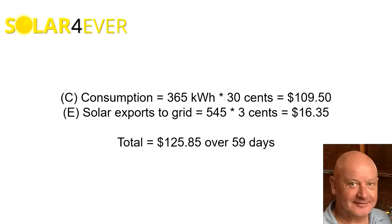So we'll finish up with putting some values on things. Consumption based on the price of power being 30 cents — our self-consumption saved us $109.50, and our exports to the grid based on a feed-in tariff of 3 cents was $16.35, making the total $125 over the billing period in this example. We normally see our clients saving about $100 a month on average, $1,200 a year from a typical 5 kilowatt, 6.6 kilowatts of panels installation. So this big winter was particularly down on what the average would be.